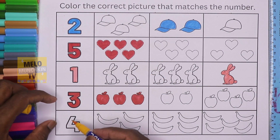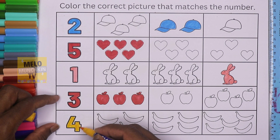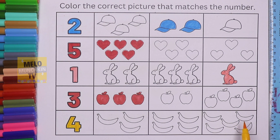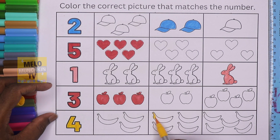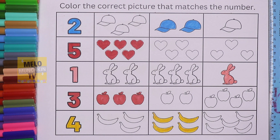Let's color the number first and then we'll see which box has four bananas. This one: one, two, three, four — so this box has four bananas. Let's check the last one: one, two, three, four, five — so that is five. So four bananas — done!